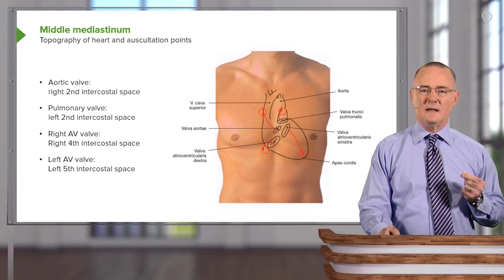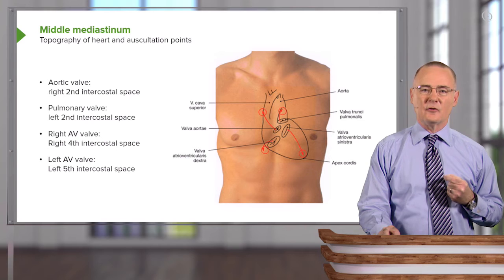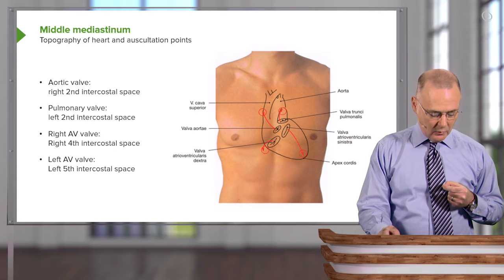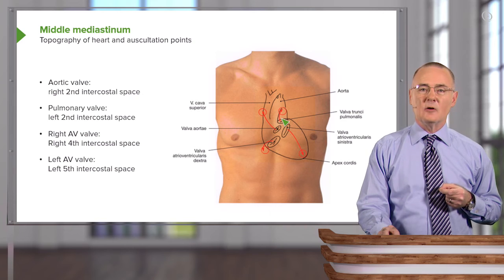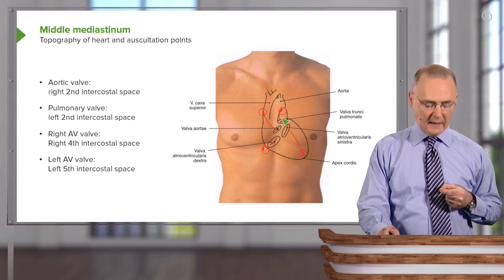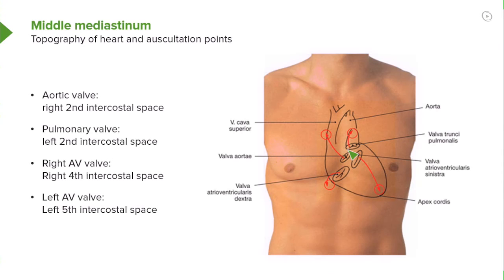The optimal area to auscultate the aortic valve is the right second intercostal space. We also have the pulmonic or pulmonary semilunar valve, and if you follow the vector of blood flow out through this valve, the optimal area to detect closure is going to be in the second intercostal space as well, but in the left second intercostal space.